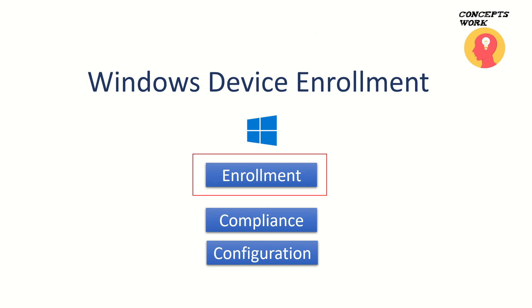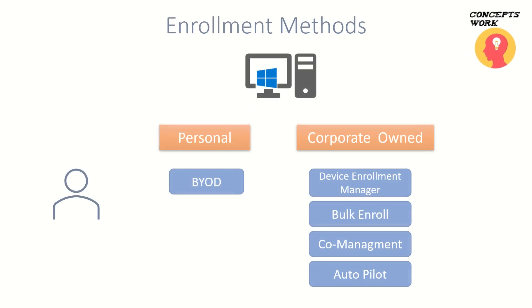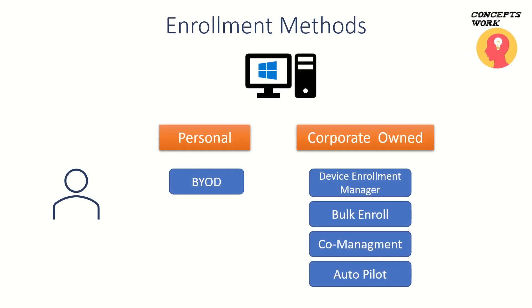As I talk about Windows, the device you are trying to enroll can be personal or corporate owned. If you are enrolling a personal device, the enrollment method will be BYOD. In case of a corporate owned device, you can choose Device Enrollment Manager — an account which can enroll up to 1,000 devices — or you can choose Bulk Enroll, or Co-management where a device can be managed from both SCCM and Intune, and the last one is Autopilot.